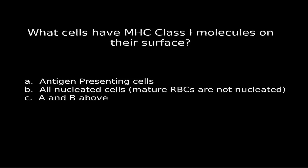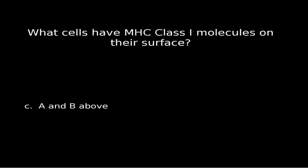Question five asks which cells have MHC class 1 molecules on their surface. Answer A is antigen presenting cells — yes, those are nucleated cells, so they do have it. Answer B is all nucleated cells — mature red blood cells are not nucleated, so essentially the answer is basically all nucleated cells.